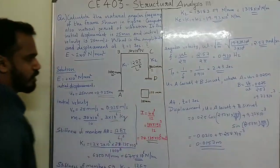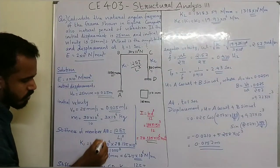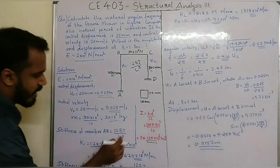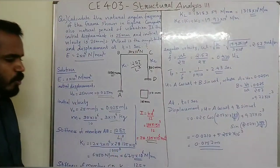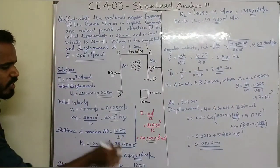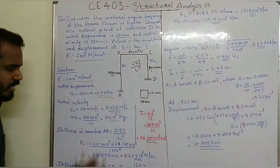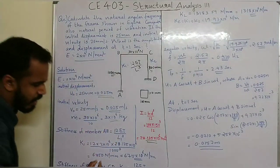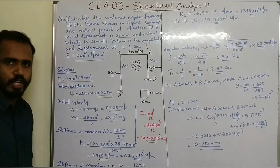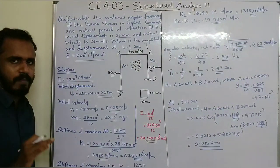K1 is equal to 12 into 2 into 10 raised to 4 into I, where I is 28.125 into 10 raised to 6 and L is 1000mm. K1 is equal to 6750 N/mm.